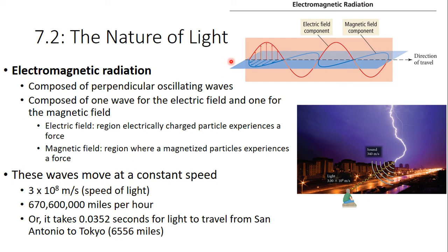Now light is incredibly fast, way faster than sound. It has a constant speed of 3 times 10 to the 8 meters per second, or 670 miles per hour, or it would take you 0.03 seconds to get from San Antonio to Tokyo. So light is incredibly fast.